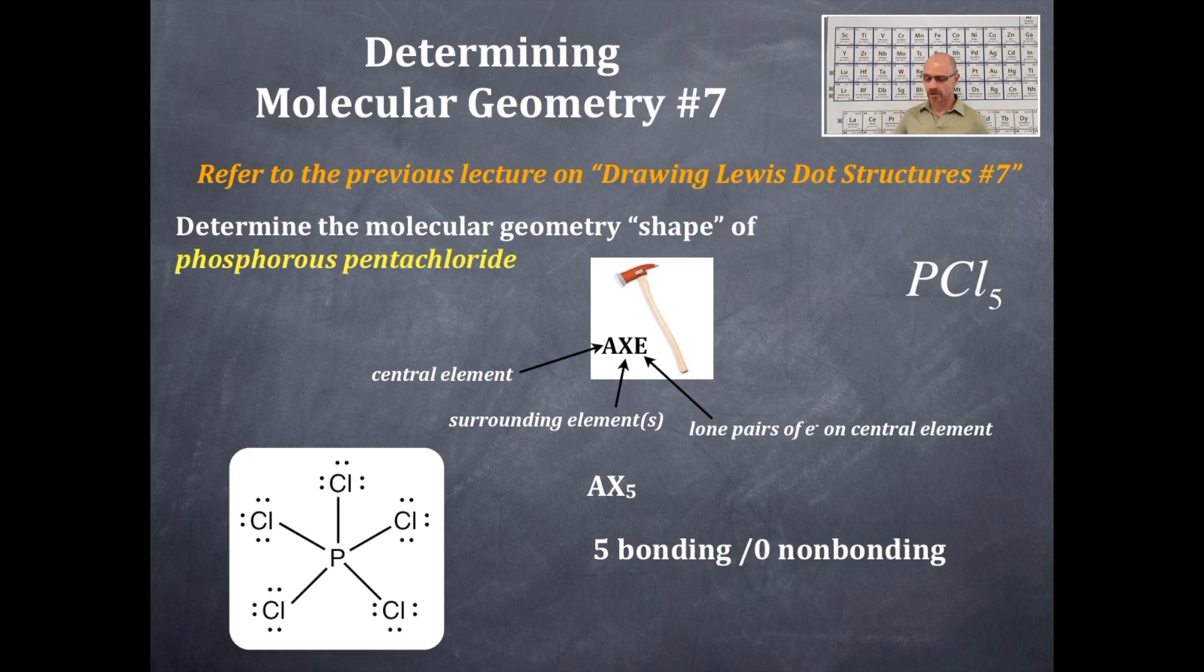I'm going to hold up a model of this. This is one of my favorite shapes here, and this is the shape right over here. This is the shape of a five domain with no lone pairs on the central atom.